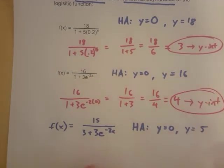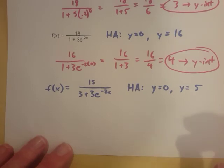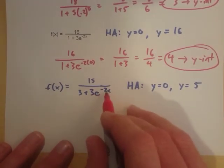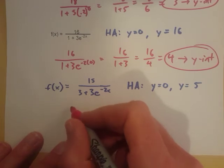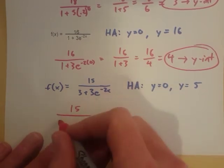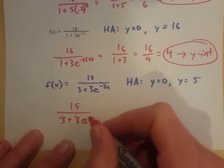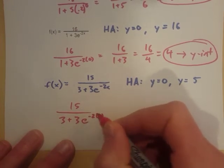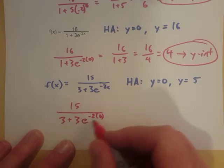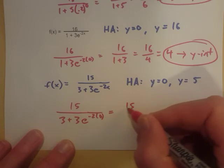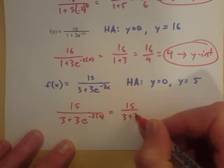So it's really the same thing every single time. What makes the y-intercept here is no different. We put in the 0 for x. We have 15 over 3 plus 3 times e to the negative 2 times 0. Again, negative 2 times 0 is 0. e to the 0 is 1. So now we're talking 15 over 3 plus 3.